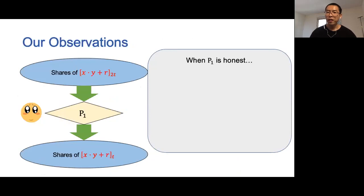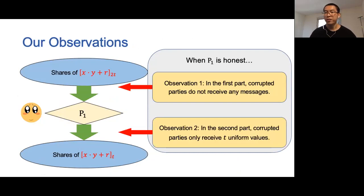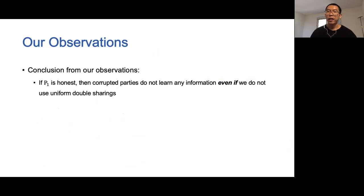Different from GSC20, we make two observations when the first party is an honest party. First, when the first party receives the whole sharing of x times y plus r, since P1 is the only receiver, corrupted parties do not receive any messages. Second, when the first party sends shares of the reconstruction result to other parties, corrupted parties only receive uniform values as their shares. These two observations hold even if the adversary knows all the shares of double sharings used in the multiplication protocol. Therefore, if the first party is honest, then corrupted parties do not learn any information, even if we do not use uniform double sharings.